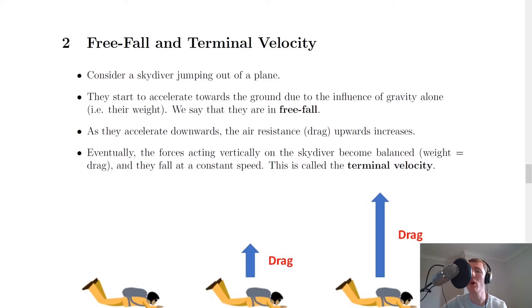Welcome back. In this video we're going to go over free fall and terminal velocity — two concepts you would have come across at National 5 level. To remind ourselves, we're going to consider the specific example of a skydiver jumping out of a plane. It shouldn't be a surprise that they'll start to accelerate towards the ground due to gravity alone, i.e. their weight. When they do this, we say they are in free fall. An object is in free fall if it experiences only the force due to gravity acting on it.